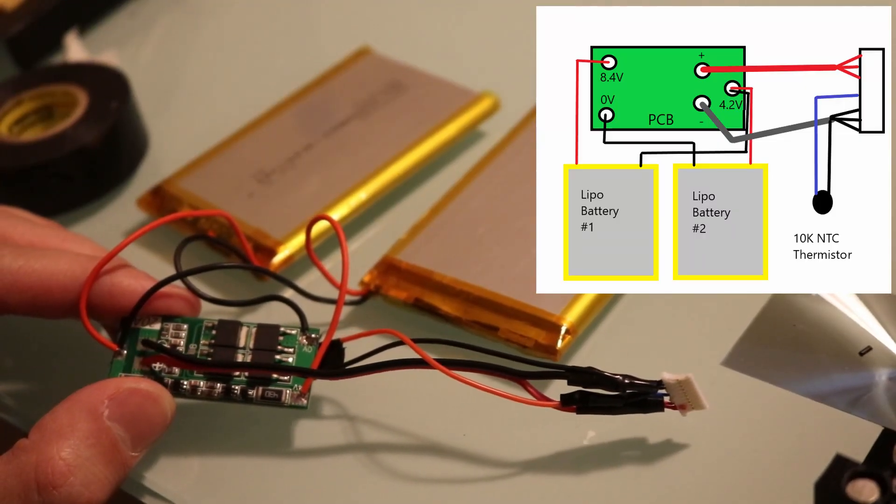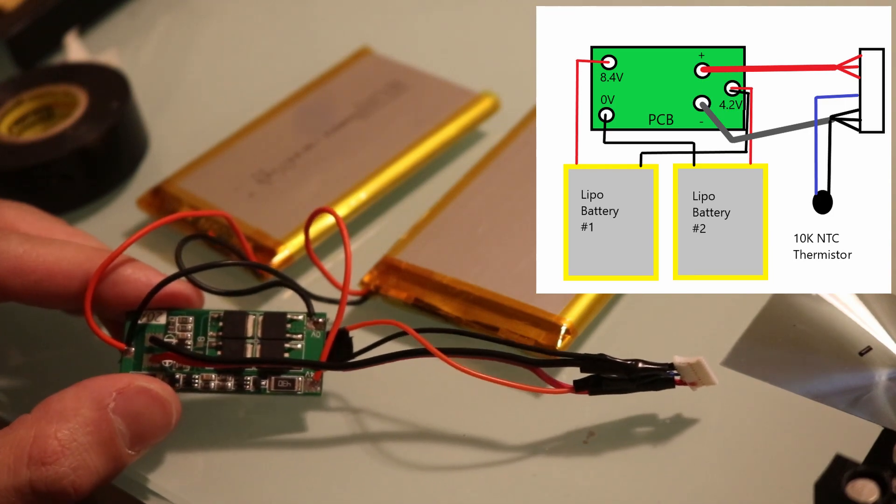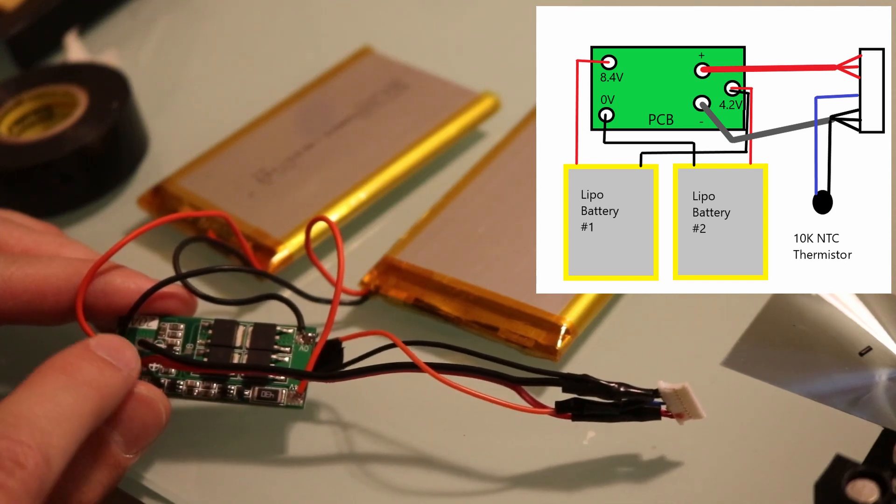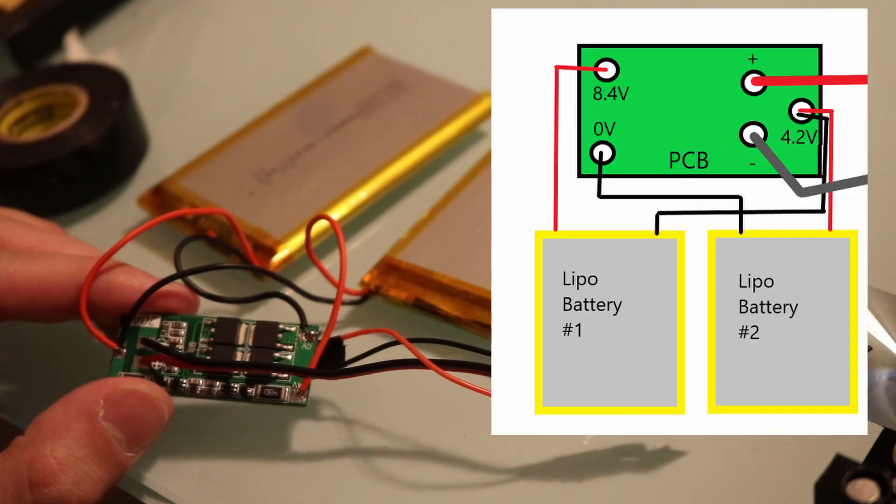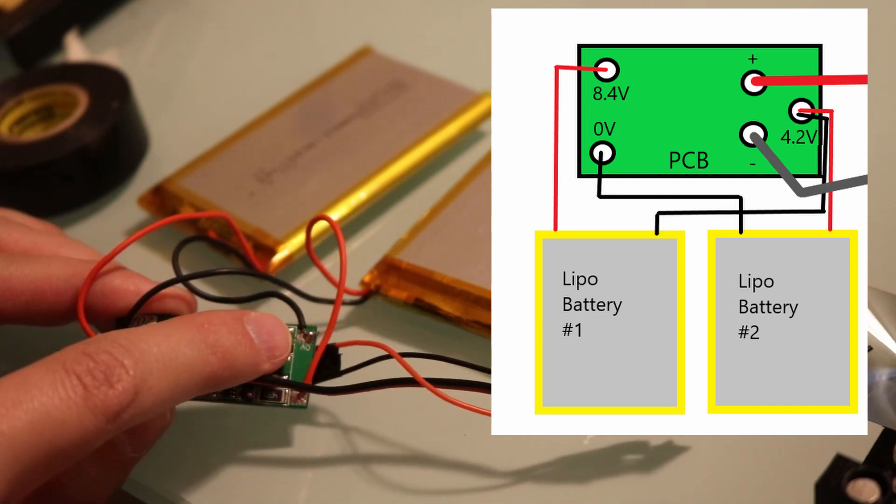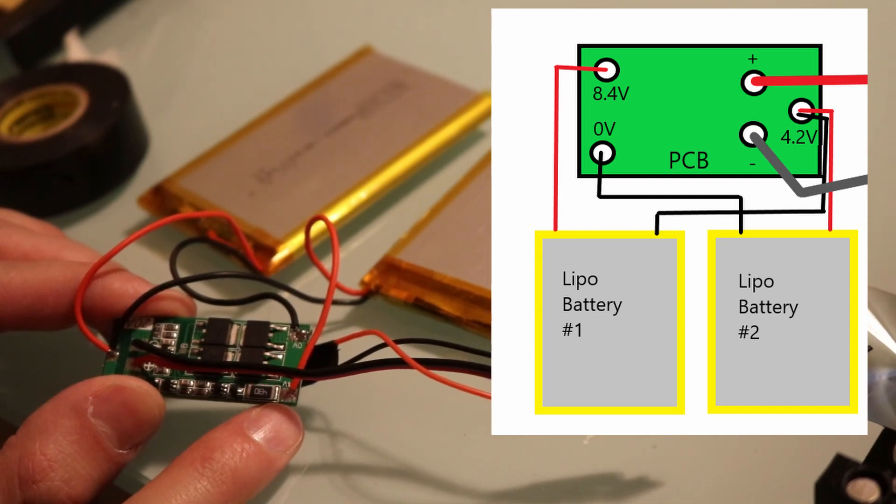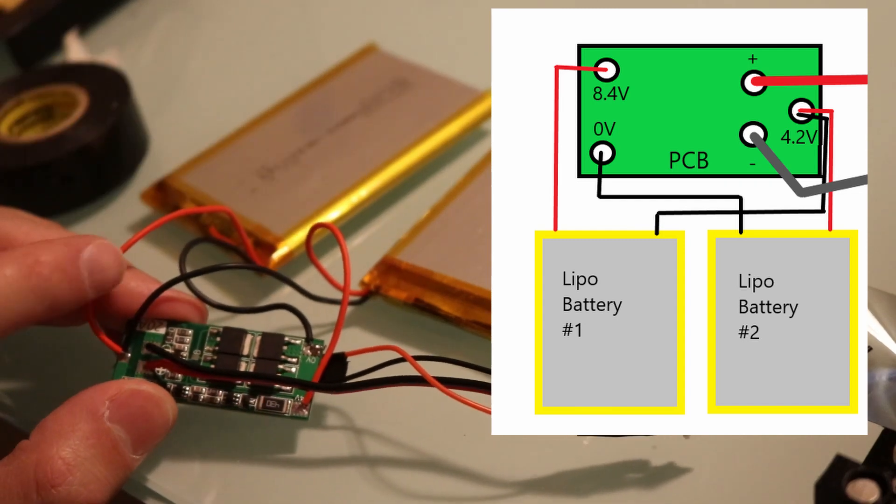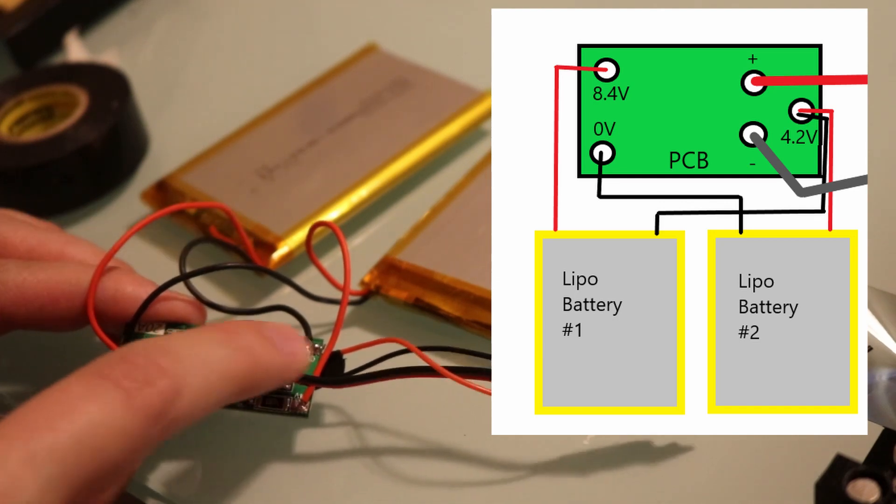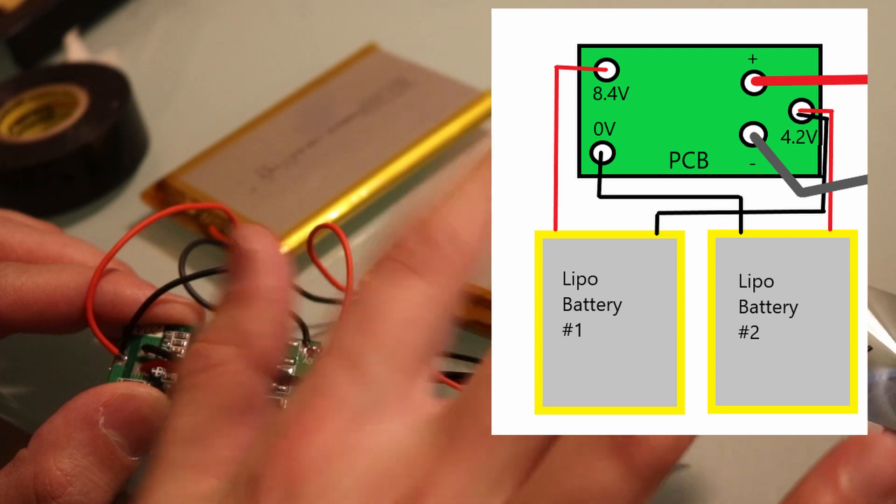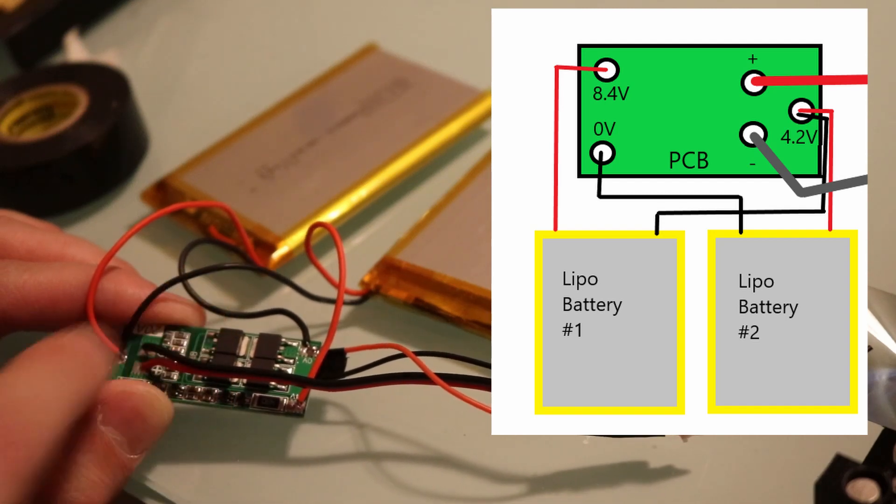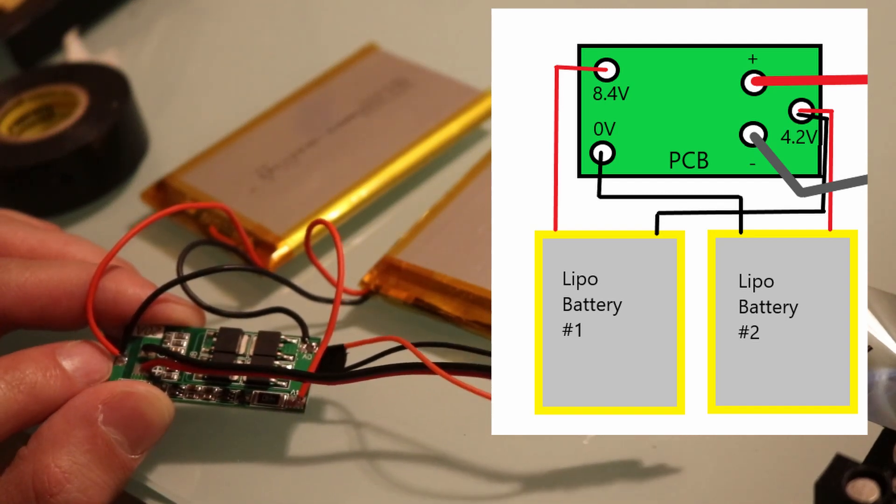Before I go over the step-by-step guide I did want to give you a high level wiring diagram overview. We've got two LiPo batteries and we've got this PCB here which has three battery points and the two charging lead cables. We have a 4.2 volt midpoint, we have a zero volt reference and an 8.4 volt. From battery one I've got the positive hooked up to the midpoint and the negative hooked up to the zero volt point. Battery two, I've got the red positive hooked up to the 8.4 volt line and the negative paired with the positive from the other battery at the midpoint.